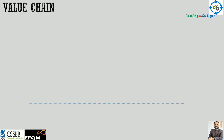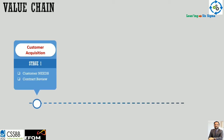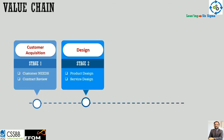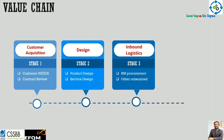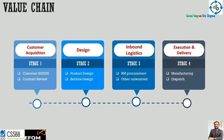Here is a simple value chain just to depict the context. Stage one is customer acquisition, stage two is the design of a product or service, stage three is raw material and other outsourced procurement requirements to convert a design into a product, and finally you execute, manufacture, deliver, and dispatch. You will find areas of opportunity at every place in this chain.